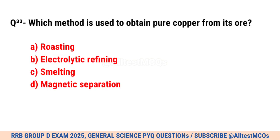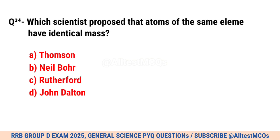Question No. 33. Which method is used to obtain pure copper from its ore? Correct option is B. Electrolytic refining.